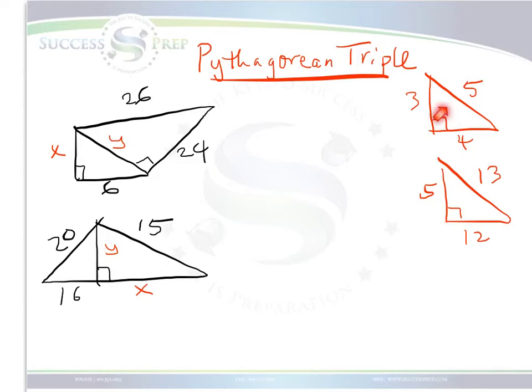So this is a Pythagorean triple triangle: 3, 4, 5. The 5 will always be the hypotenuse. In this particular case, you can have 5, 12, 13. Again, 13 is the hypotenuse.